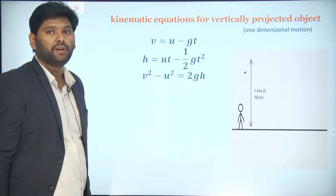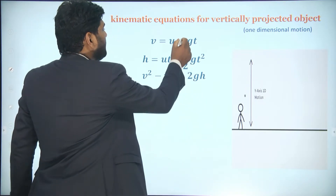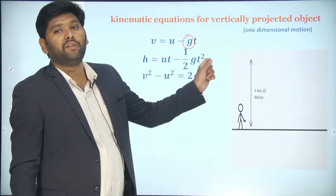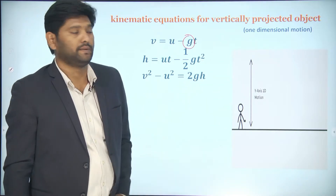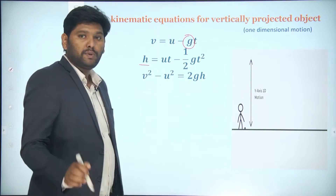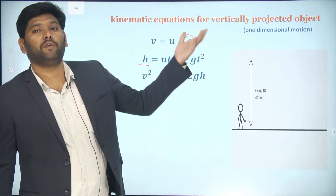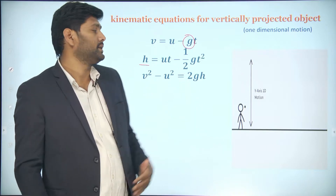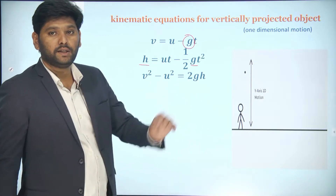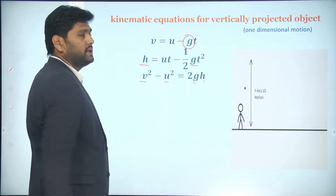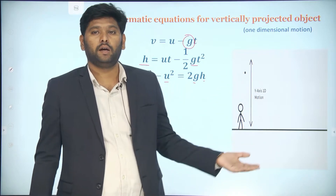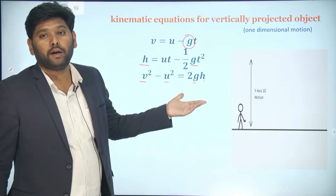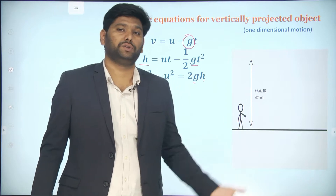What changes have happened here? Instead of a, we have applied g because the acceleration is due to gravity. Also, the displacement becomes height h, because the object is moving upward and covering some height. The acceleration is changed to g throughout. So the third equation becomes v² − u² = 2gh, where h is the height covered under the influence of gravity.